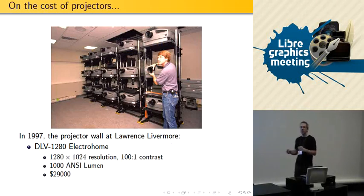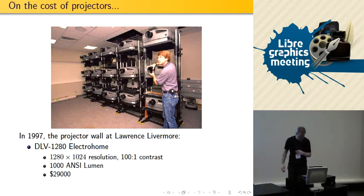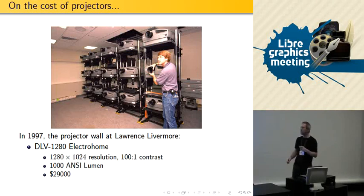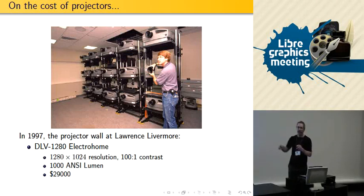However, the notion of cheap changed very fast. In 1997, the projectors there were 1280 by 1024, 100 to 1 contrast — which is really low — 1000 lumen, and $29,000 per projector. So that was not very affordable.